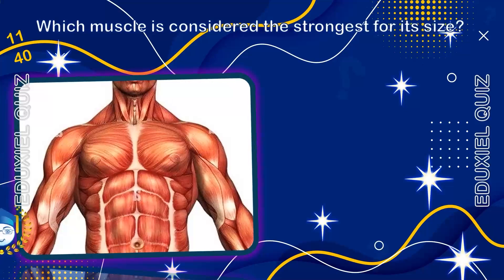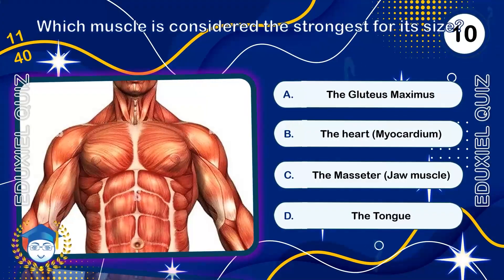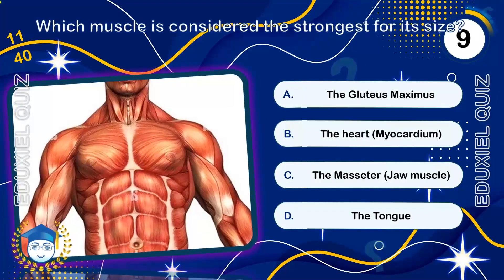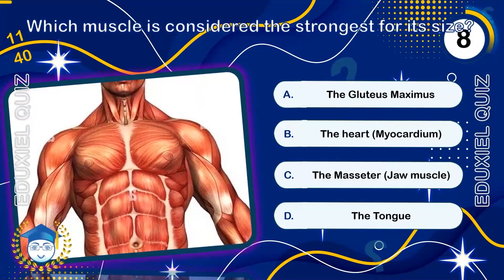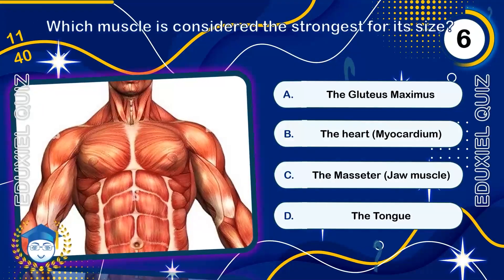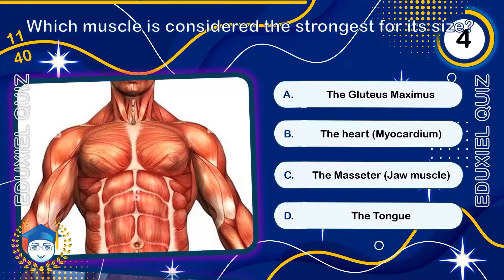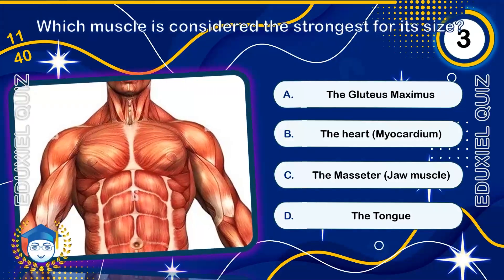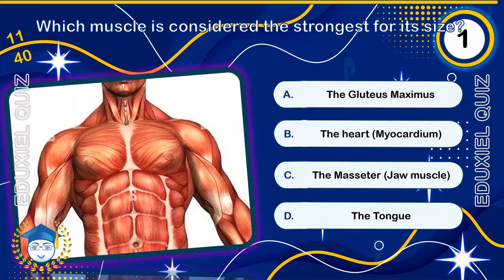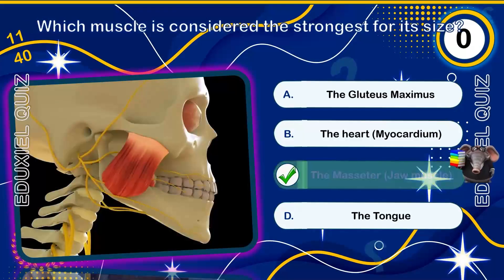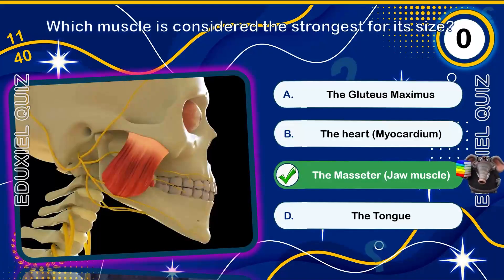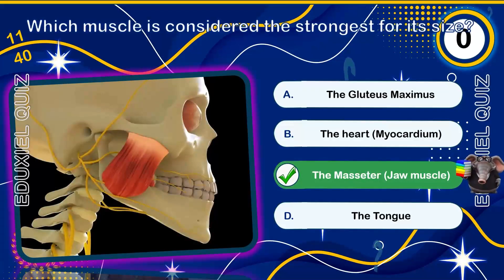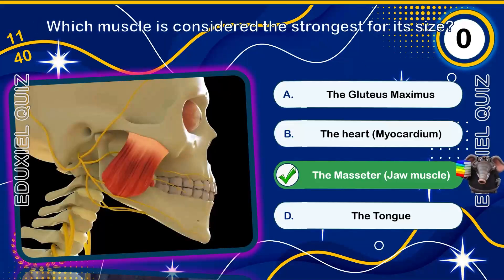Which muscle is considered the strongest for its size? The masseter, the jaw muscle. While the legs produce more total force, the masseter muscle is the strongest in terms of maximum bite force it can generate, estimated up to 200 pounds of pressure.